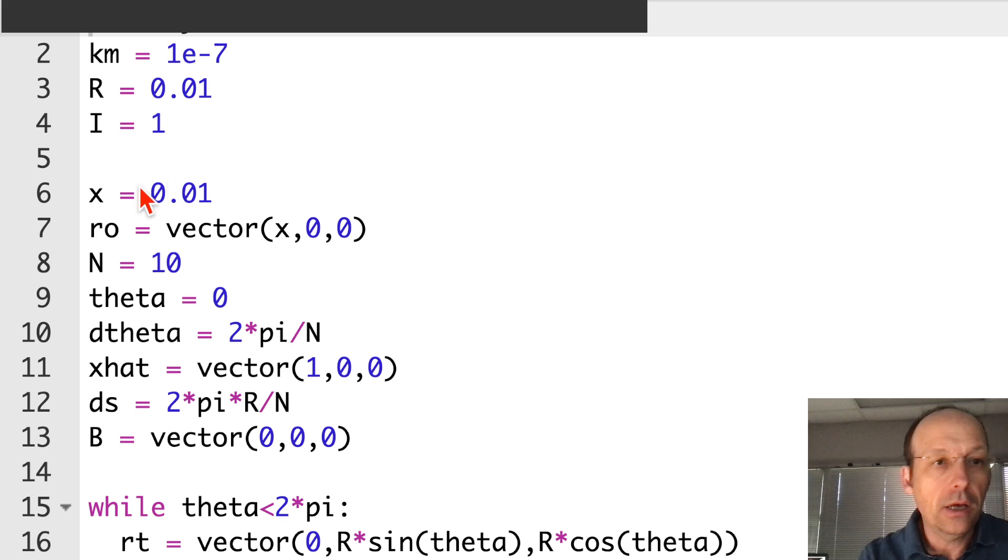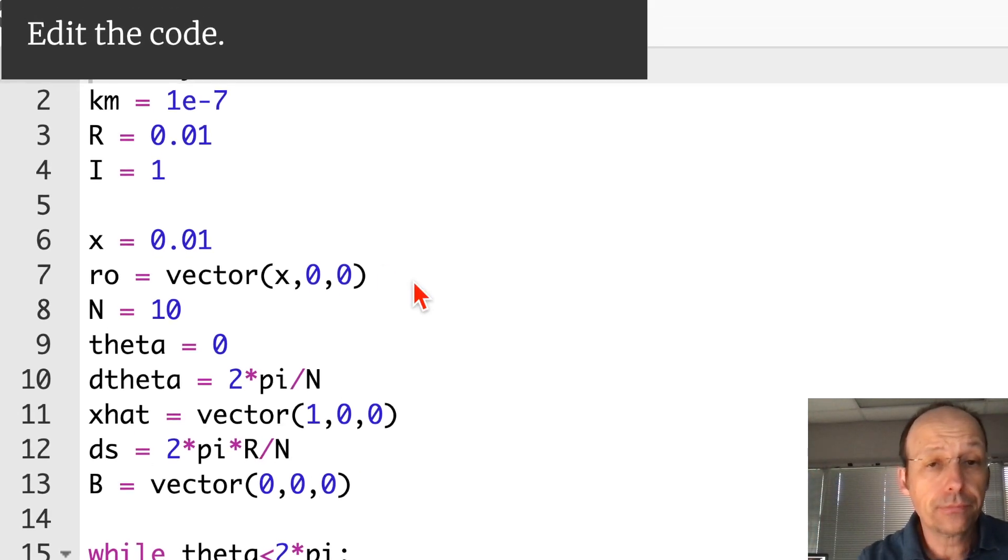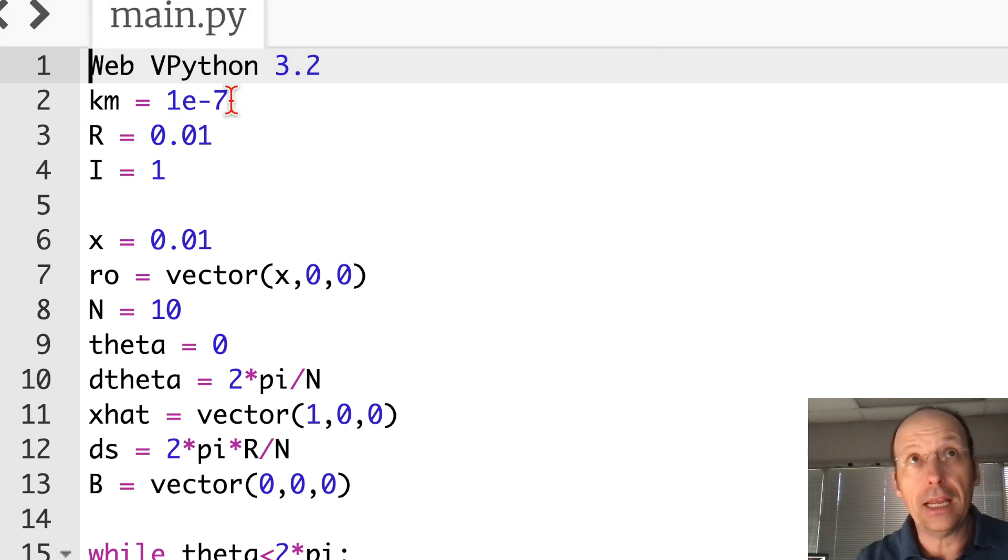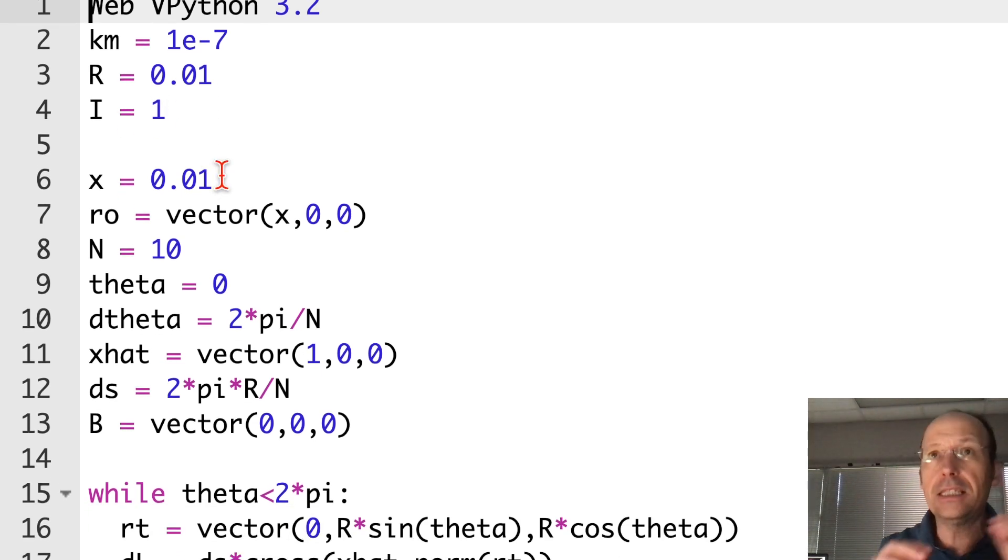Let's take a gander at this code. This is the code I had before, linked to that video down below. Let's go over the whole thing. This is the magnetic constant, the radius of the circle, the current. X is the location on the x-axis. I made the ring in the y-z plane. Then x hat and d theta. So d theta is used to find the vector location and the vector direction of each little piece. I've broken it into 10 pieces for my loop, and I'm going to keep it at that because it worked pretty well.